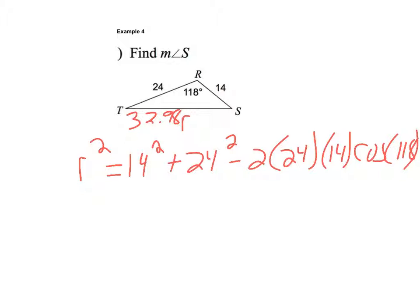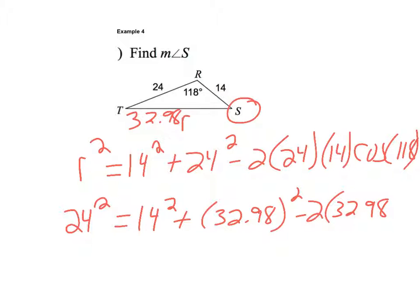And now I can find S. So if I want angle S I'm going to have 24 squared equals we'll have 14 squared plus 32.98 squared minus 2 times 32.898 times 14 and then we'll have cosine S. So I'm going to do 24 squared minus 14 squared minus 32.98 squared. That gives me negative 707.6804 and I'm going to divide that by negative 2 times 32.98 times 14.